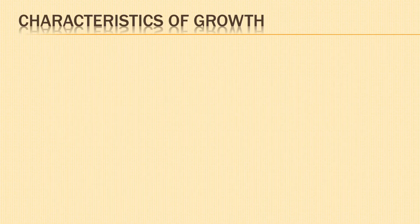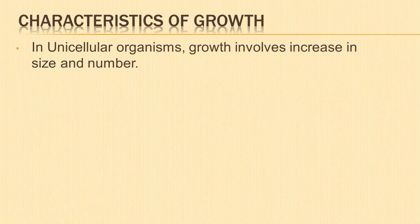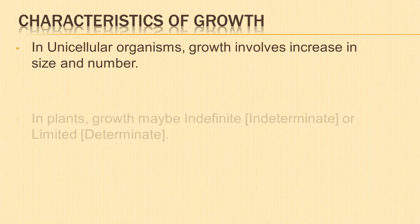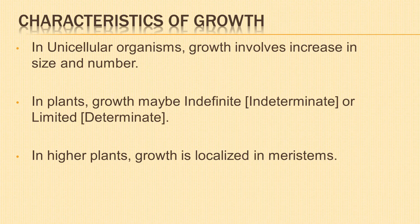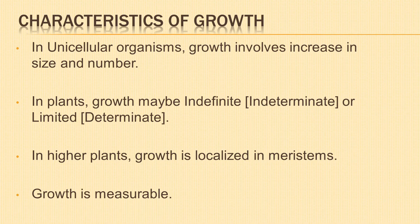Let us look into the characteristics of growth. In unicellular organisms, growth involves increase in size and number. Cell division leads to reproduction and increase in population. In plants, growth is indefinite or indeterminate in certain parts like stem and root, but limited or determinate growth in leaves, flowers, etc. In higher plants, growth is localized in some regions called meristem. The meristematic cells have the capacity to divide and produce new cells. Growth is measurable by a variety of parameters like dry weight, area, volume, cell number, etc.